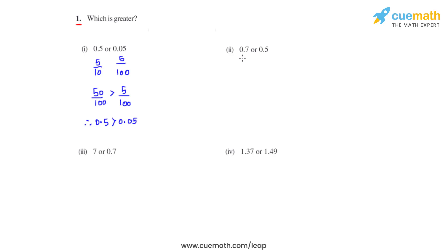Coming to the second bit, we have 0.7 whose equivalent fraction is 7 over 10, and 0.5 whose equivalent fraction is 5 over 10. Since 7 is greater than 5, we can say that 7 over 10 is greater than 5 over 10, therefore 0.7 is greater than 0.5.